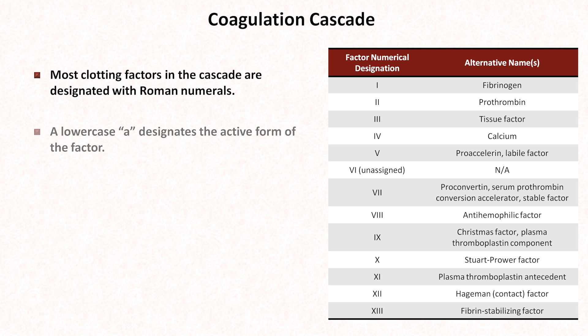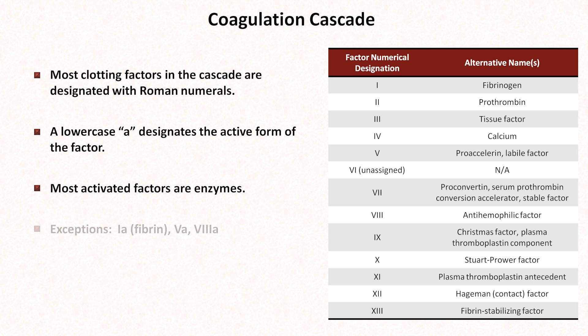A lowercase 'a' after the roman numeral designates the active form of the factor. Most activated factors are enzymes, with the major exceptions being 1a, commonly known as fibrin, 5a, and 8a.